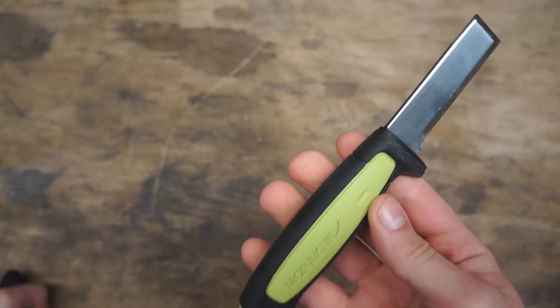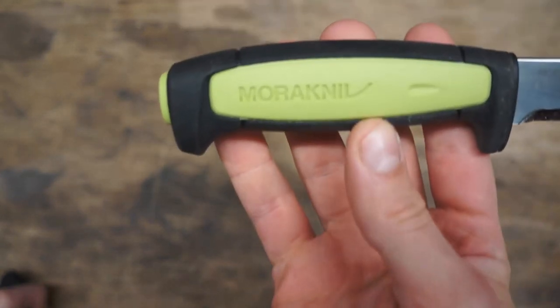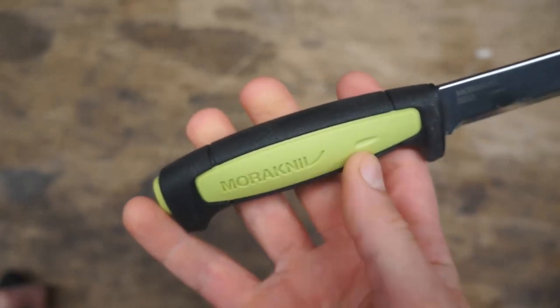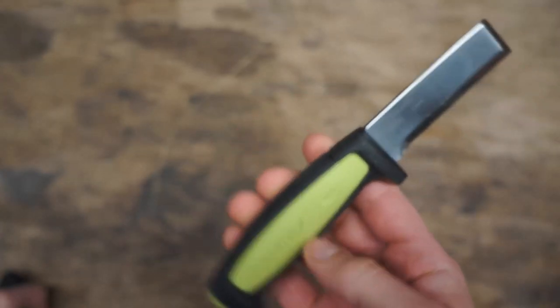This is a knife made by the Mora Knife Company from Sweden, very similar to the bushcraft knife that everyone knows and loves. It's 13 to 15 bucks, depending on which one you go with.